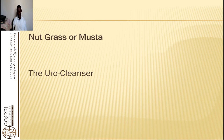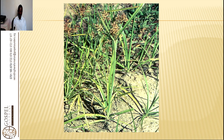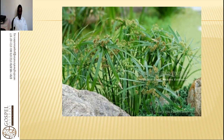Today we are discussing nut grass, also called mooster — it is a urinary cleanser. This is a common herb found in swampy areas, a common grass that grows everywhere in swampy areas. It has very sharp leaves and the roots look like ginger and are very sweet. If you roast it, someone will just eat it without knowing they are eating a grass. This is how it looks — something very common.